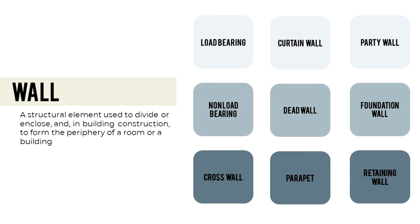A dead wall is a wall without openings. A parapet wall is that part of any wall entirely above the roof line. A party wall separates two or more buildings and is used in common by said buildings. A foundation wall is that portion of an enclosing wall below the first tier of floor joists. A retaining wall resists the lateral displacement of any material. A subsurface wall is built to resist the lateral pressure of internal loads.